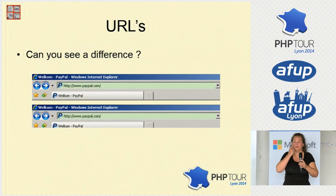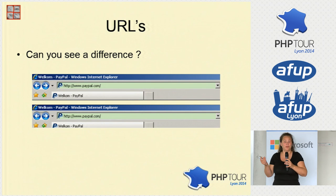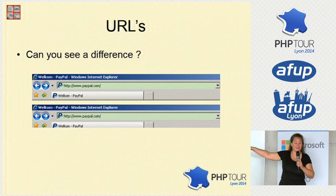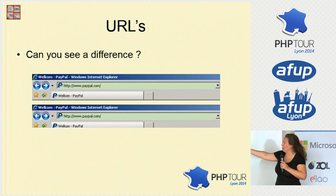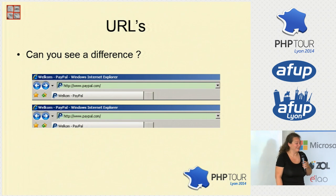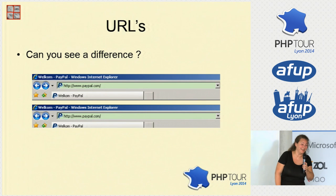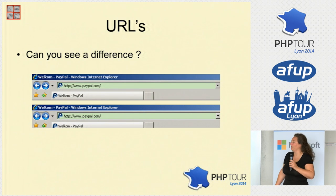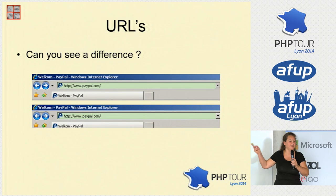URLs: we all know you can now use international domain names with Unicode characters. Anyone see the difference between the two examples shown? The first is in Latin, the second in Cyrillic. The Cyrillic alphabet has many of the same characters as the Latin alphabet — definitely enough to fake PayPal. Not a good development. There is a spoof-checking tool I'll mention later. These are dangerous situations.